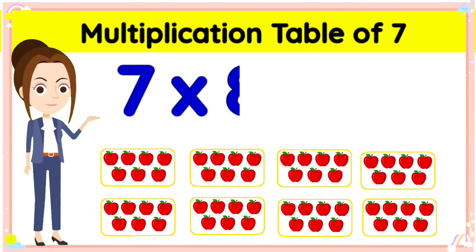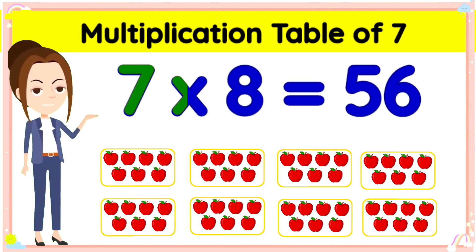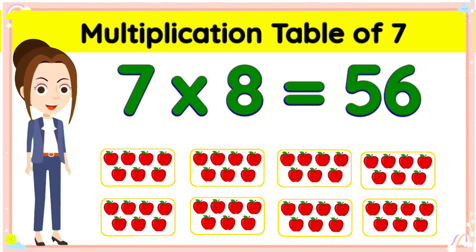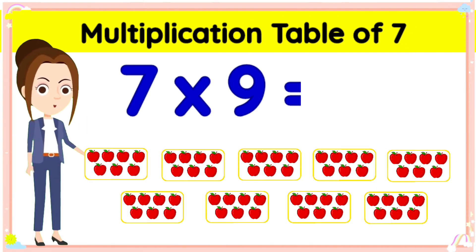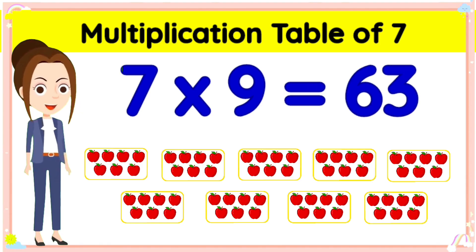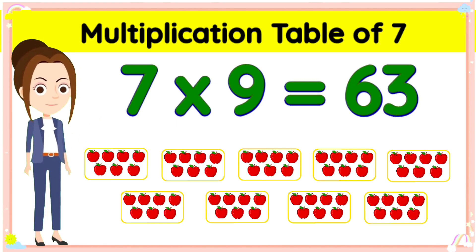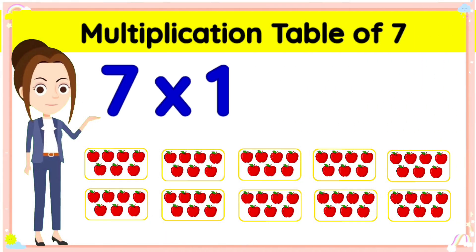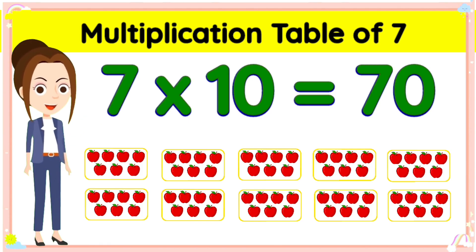Seven eights are fifty-six. Seven nines are sixty-three. And seven tens are seventy.